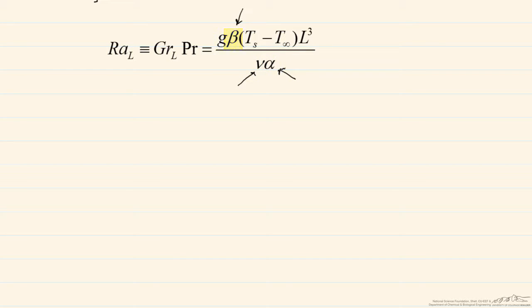In order to look these up, we have to have the right temperature. What we use for these correlations is the film temperature, which is just the average or Ts plus T infinity divided by 2 in Kelvin.